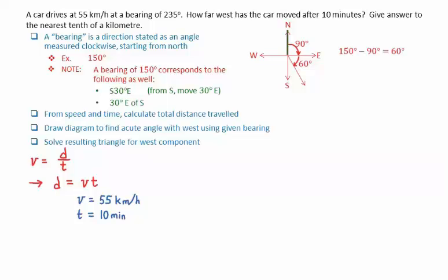We know that the speed is 55 kilometers per hour, and the time is 10 minutes. Note that this time must be converted into hours using a conversion factor of 1 hour equals 60 minutes. This gives a result of 0.17 hours for the time.